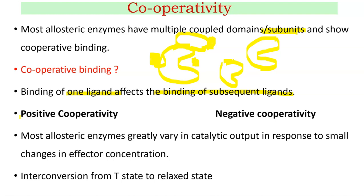There are two types of cooperativity: positive cooperativity and negative cooperativity. Binding of activator molecules leads to positive cooperativity, increasing enzyme activity. Binding of inhibitor molecules leads to negative cooperativity, decreasing enzyme activity. Most allosteric enzymes vary greatly in catalytic output in response to small changes in effector concentration — either activators or inhibitors.